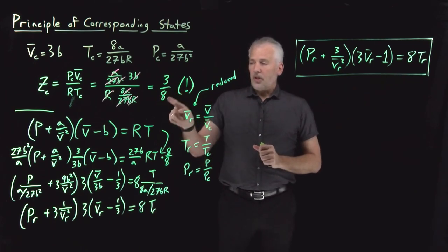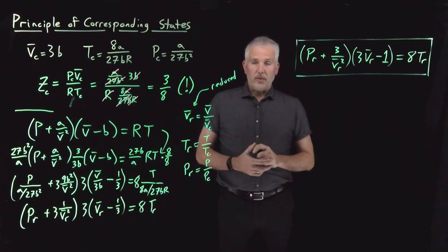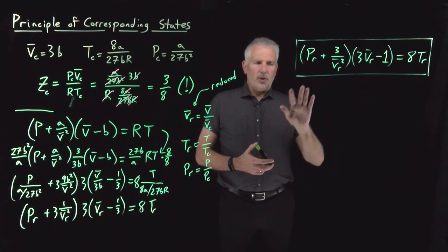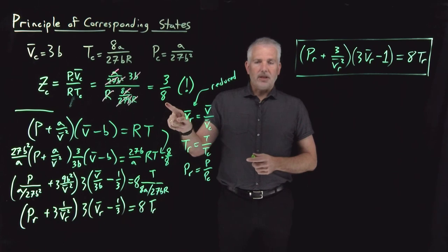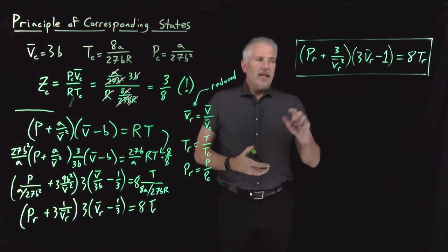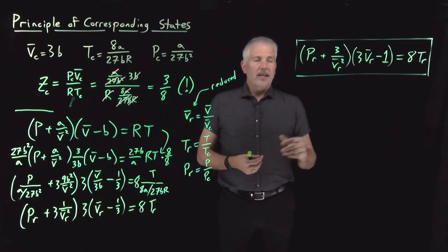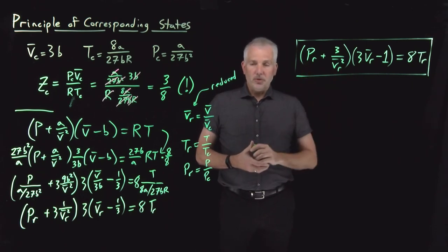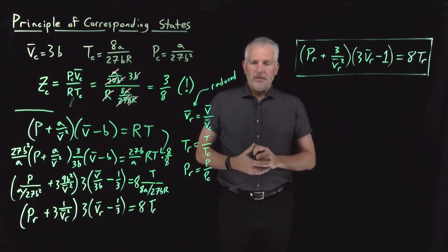So not only do all gases behave somewhat alike at the critical point, but according to the Van der Waals equation, all gases behave the same at all points if we express them in terms of reduced properties rather than actual pressure, volume, and temperature. This is what we mean by the principle of corresponding states: any gas at its critical point behaves the same as any other gas at its critical point; any gas at half its critical temperature and twice its critical molar volume behaves the same as any other gas under those same reduced conditions. That may seem surprising, but it will get easier to understand when we look at some examples and data next.